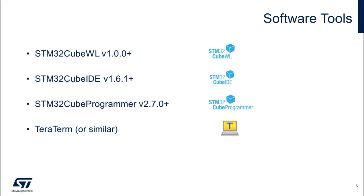Now let's take a look at the software tools, hardware, and firmware needed for the demonstration. These are the software tools you'll need to install: the STM32CubeWL firmware package, the STM32CubeIDE, the STM32CubeProgrammer, and a serial terminal program like TerraTerm.